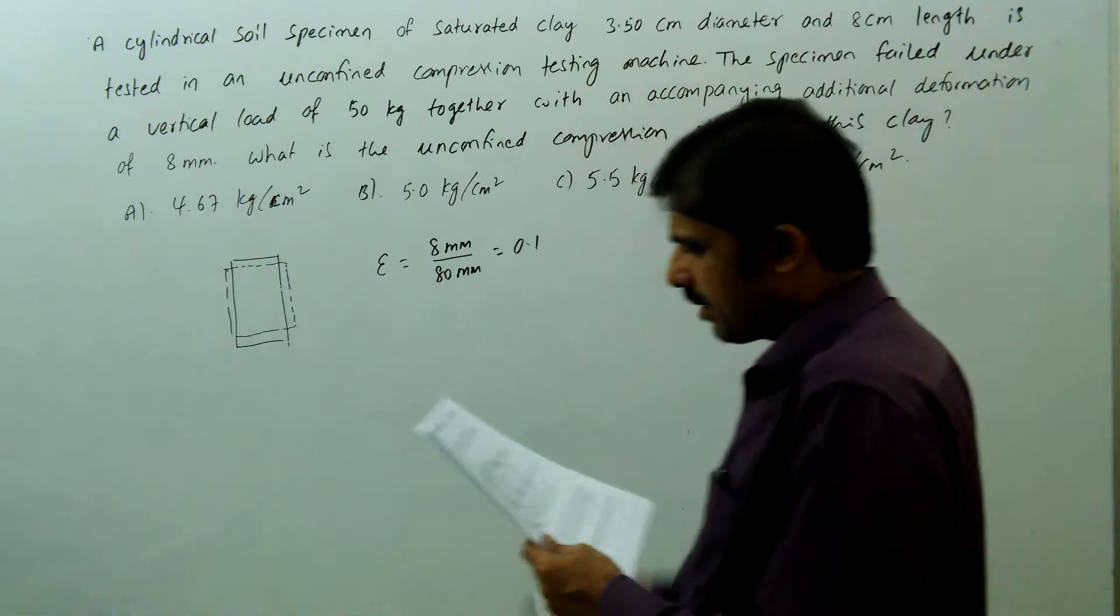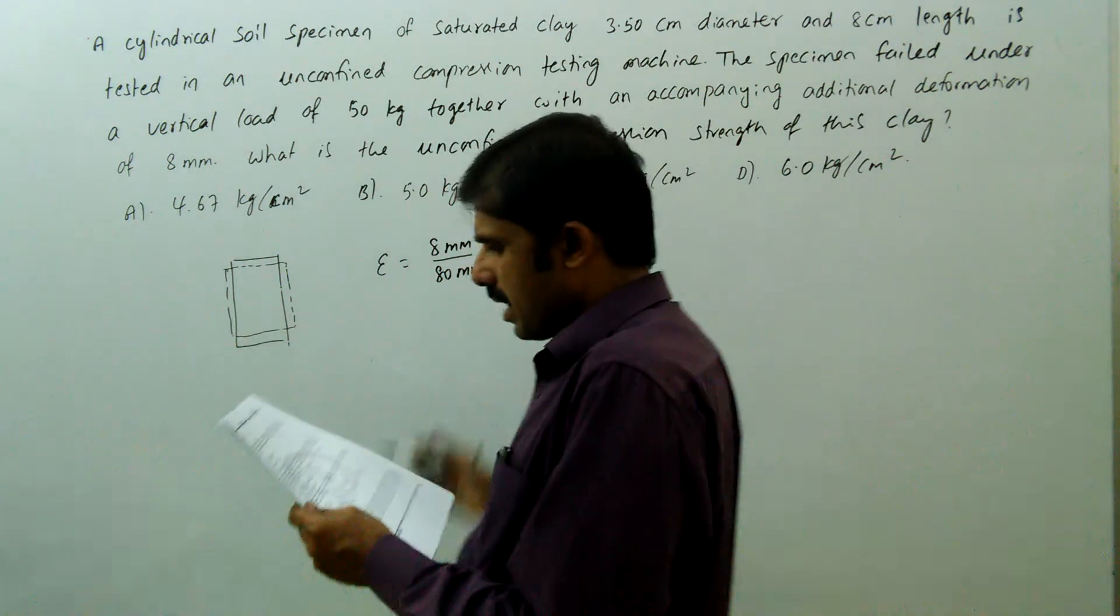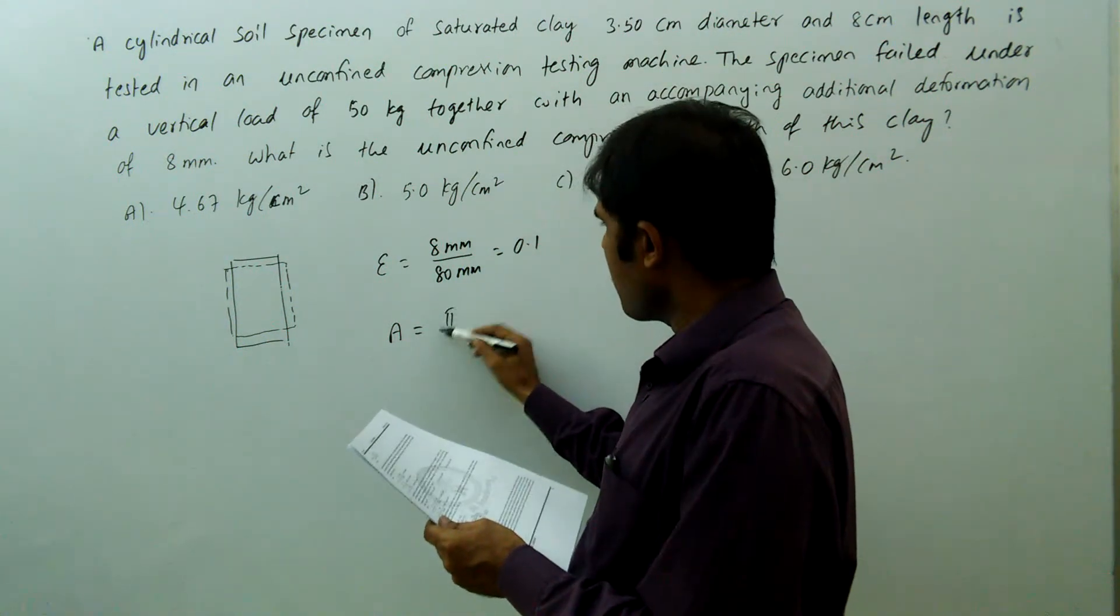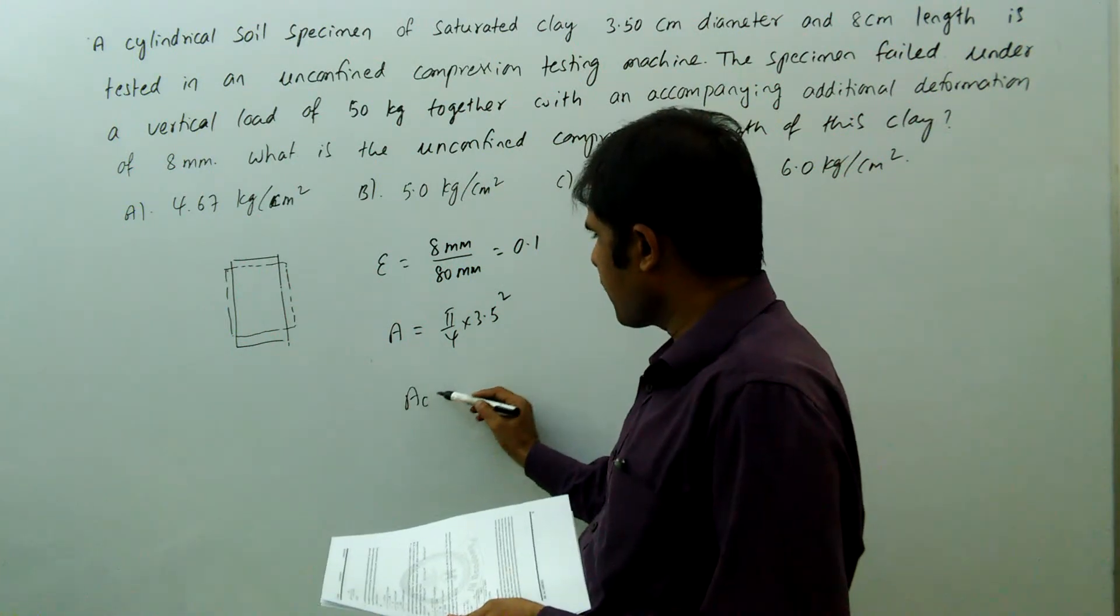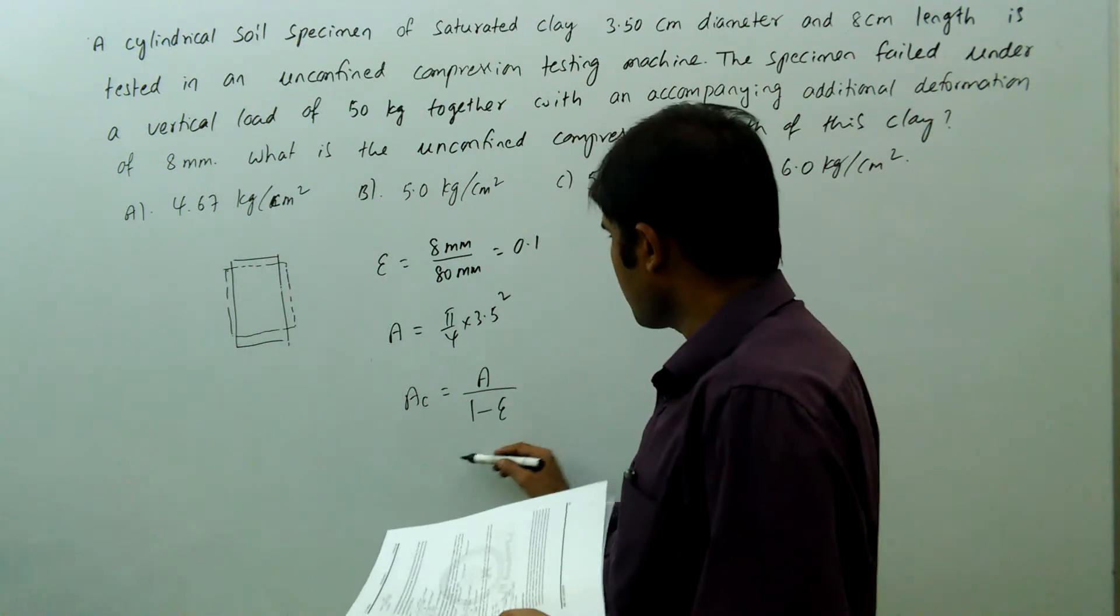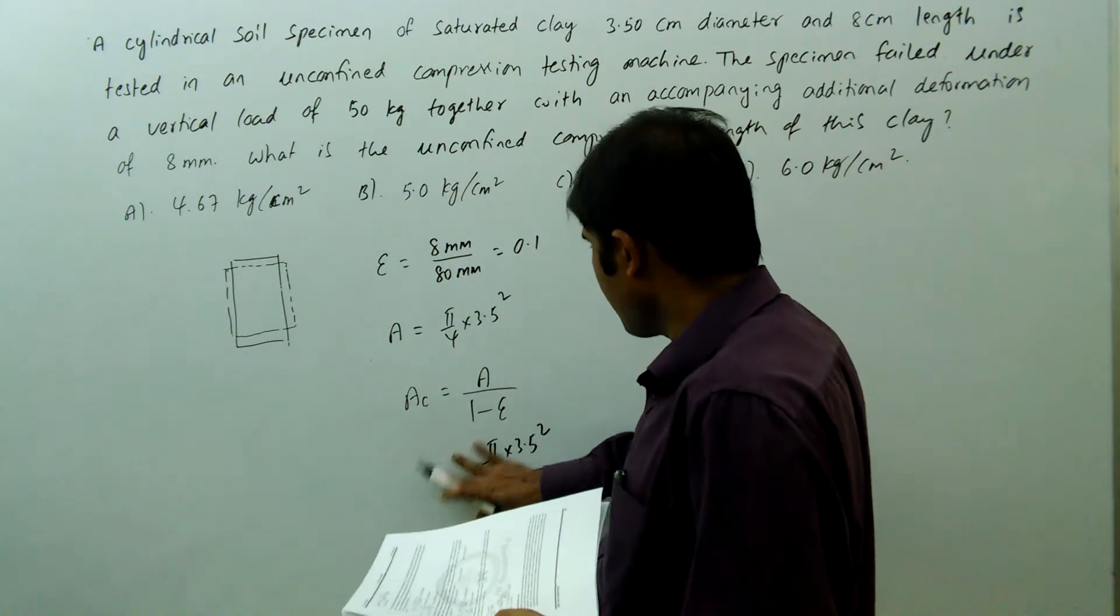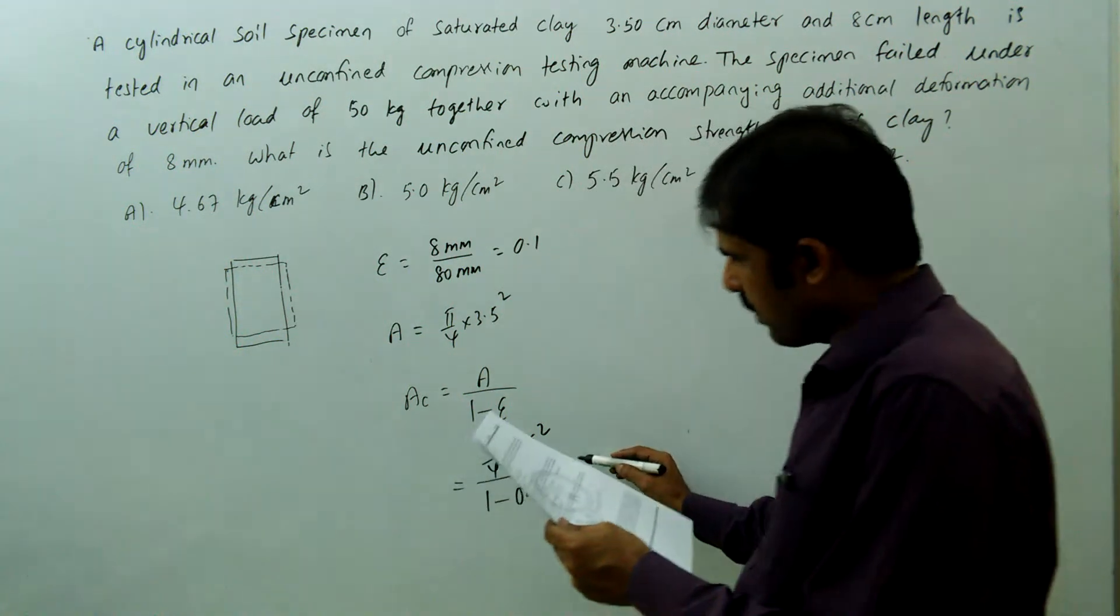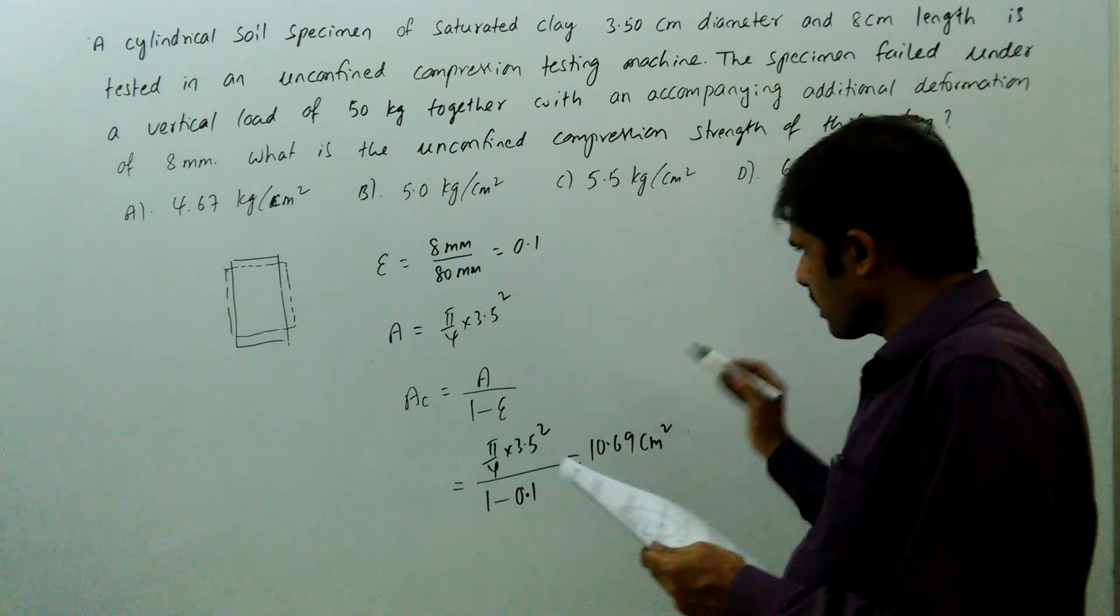Due to this strain, cross-section area will increase. Area of the cross-section equals π/4 into 3.5 square. But corrected area we can calculate: corrected area equals A divided by 1 minus epsilon. That equals π/4 into 3.5 square divided by 1 minus 0.1, which equals 10.69 cm square.